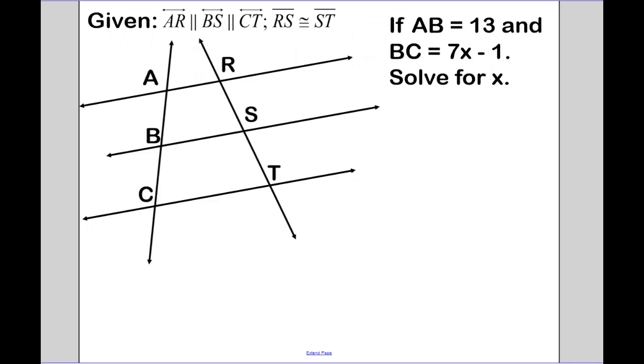An example of that. So what do I have here? I am given a parallel line, parallel line, and parallel line. And I know that RS is equal to ST. So I have three sets of parallel lines, and I cut off congruent pieces on one transversal.